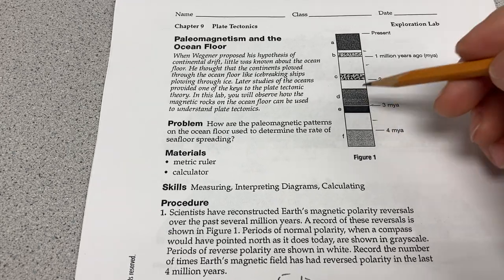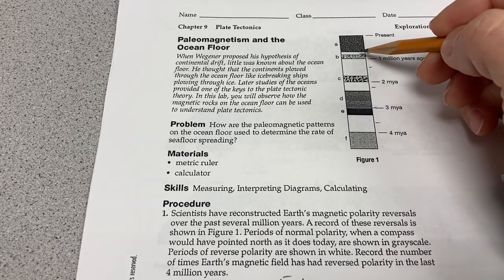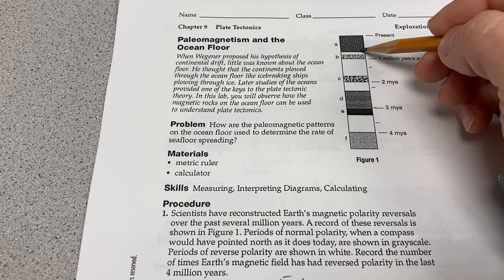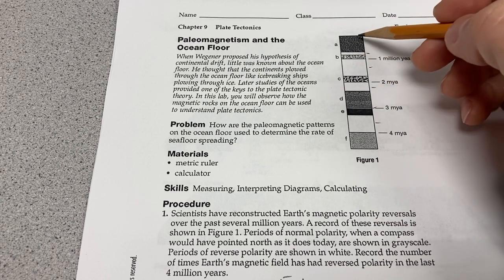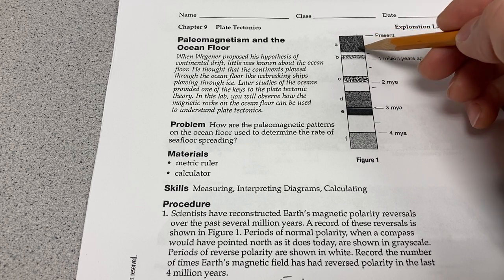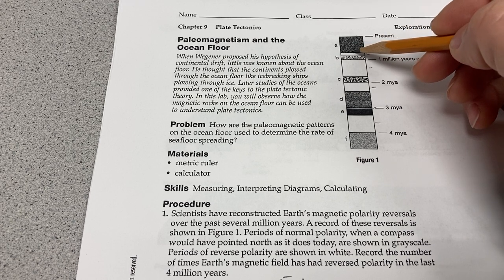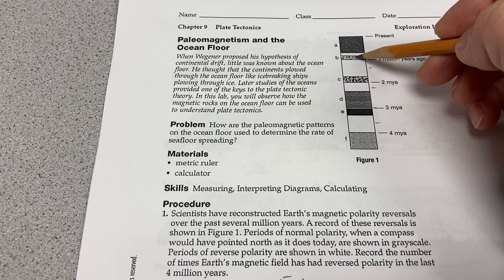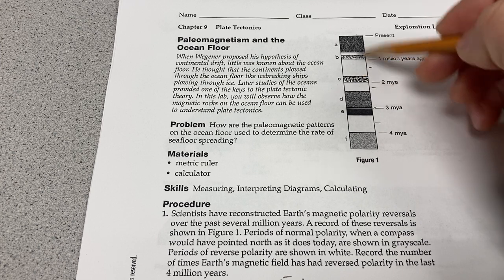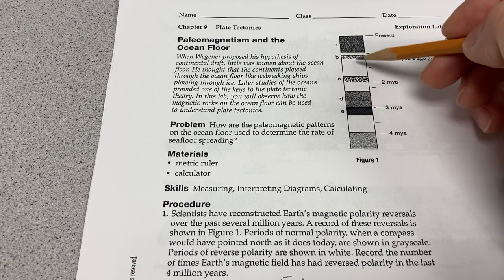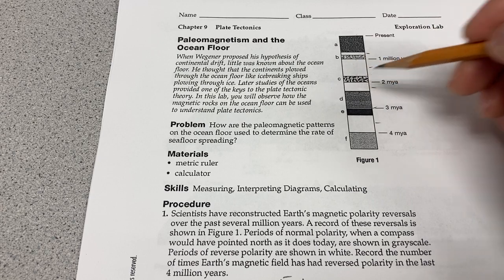Notice also that the length of time that polarity was reversed or regular — they're not equal. Just because we had, say, 0.8 of a million years of regular polarity doesn't mean we'll have 0.8 of a million years of reverse polarity — that might only be a very short segment. Just because we had a very short segment of normal polarity doesn't mean we'll have a correspondingly short segment of reverse polarity. They don't match up, but they do alternate — they repeat, but the duration of each period varies.